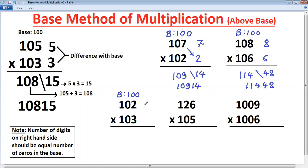Base again is 100. Both these numbers are near 200. Difference 2 here. 3 here. Multiply differences. 2 into 3 is 6. Cross addition. 102 plus 3 is 105. Now. Note this. Number of digits on the right hand side should be equal to number of 0 in the base. Number of digits on the right hand side here should be equal to number of 0 in the base. So it was matching here. It is matching here. Two digits, two zeros. Two digits, two zeros.